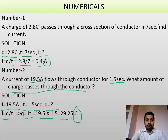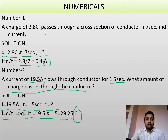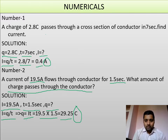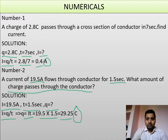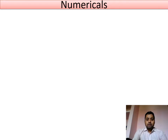In numerical problems, the unit is very important because during ICSC checking, examiners strictly look at the formula part and the unit part. If a unit is missing from any answer, there is negative marking, and if the formula is missing, one mark is deducted from the total of the numerical problem.